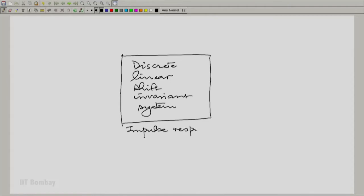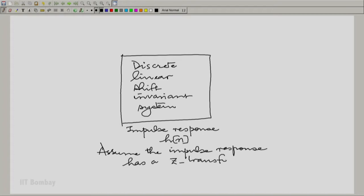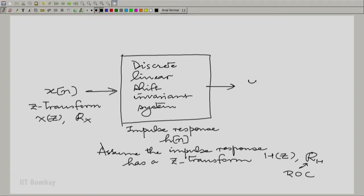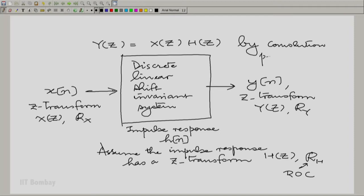It has an impulse response h of n and we hope that this has a Z-transform. The Z-transform should be an expression and a region of convergence. If the input to this discrete system x of n also has a Z-transform and so does the output y of n, then we know that y of Z is x of Z times h of Z by the convolution property.